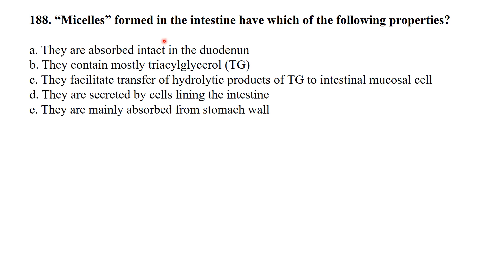MCQ 184: Micelles formed in the intestine have which of the following properties? Micelles facilitate the transfer of the hydrolytic products of triglycerides to the intestine because of their surface properties. So micelles mainly help in absorption, facilitating transfer of triglyceride hydrolytic products.